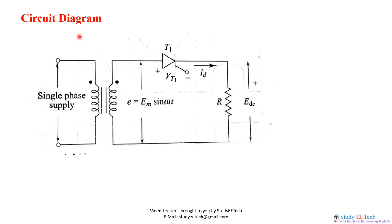Starting with the circuit diagram — as we can see here, single-phase supply has been given on the input side and there is a transformer. The transformer output voltage is Em·sin(ωt), a pure sinusoid. In the series path there is a thyristor with voltage across it — we are considering Vt1, thyristor name T1 — and after that the resistive load R is connected. The voltage across the load is Edc. The thyristor can simply either be switched on or switched off, and remember all power electronic devices use a semiconductor device in switching mode.